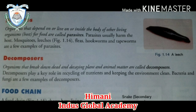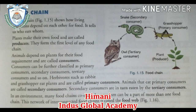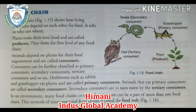After that, food chain. A food chain shows how living organisms depend on each other for their food — it tells us who eats whom. Plants make their own food and are called producers; they form the first level of any food chain. Animals that depend on plants for food are called consumers. Consumers are further classified as primary consumers, secondary consumers, tertiary consumers, and so on.